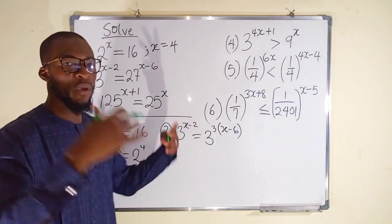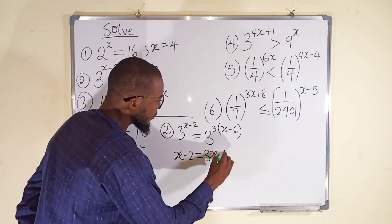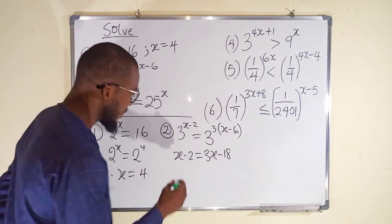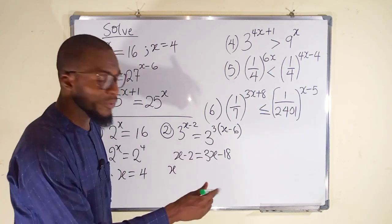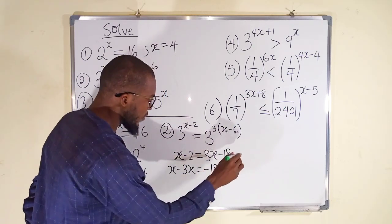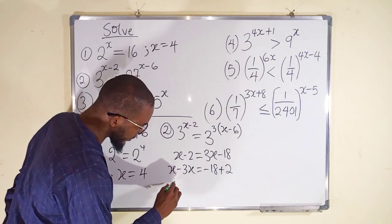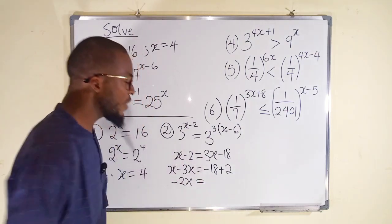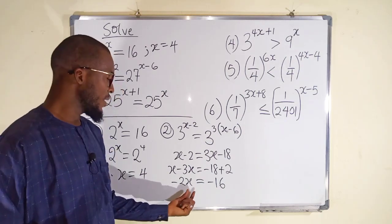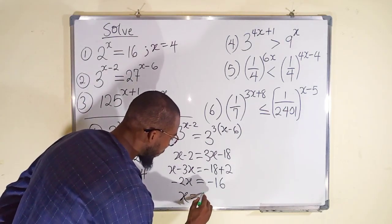Since we have common bases we can equate the powers. To the left we have (x minus 2) and to the right we have (3x minus 18). Bring all terms with x to the left and all constants to the right. To the left: x minus 3x. If the 3x crosses over it becomes negative 3x. To the right: 18, and if the 2 crosses over it becomes positive 2. This gives negative 2x on the left and negative 16 on the right. Divide both sides by negative 2: negative 16 divided by negative 2 is positive 8. Therefore x is equal to 8.